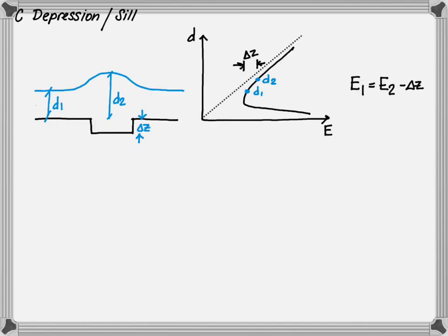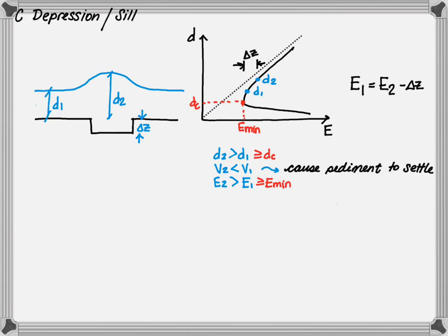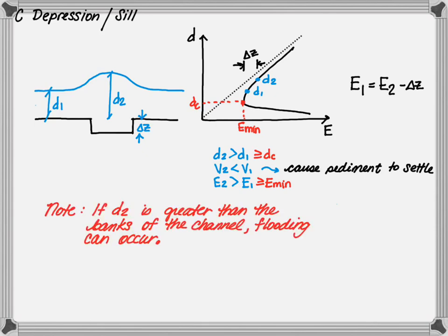Depressions and sills are different — they have a depression in the channel. In this case, the energy at point one equals the energy at point two minus delta z. When you go from point one to point two in a subcritical channel, you will actually increase the depth. The depth at point two will be greater than point one, and must be greater than or equal to critical depth. The velocity at point two is less than the velocity at point one, which is desirable in a sediment sill because sediment will start settling. The energy at point two is greater than the energy at point one, and the energy at point one must be greater than or equal to the minimum energy. If d2 exceeds the channel banks, flooding can occur, so we must be mindful of that.